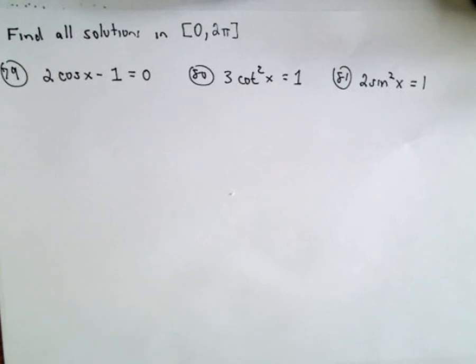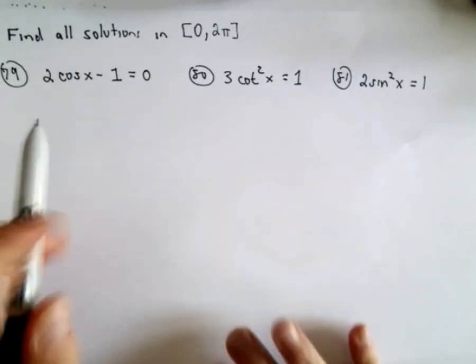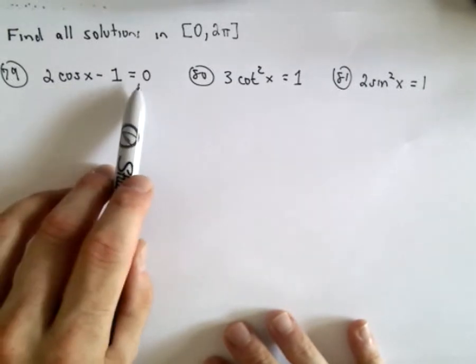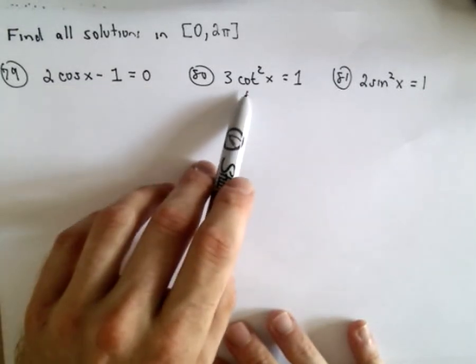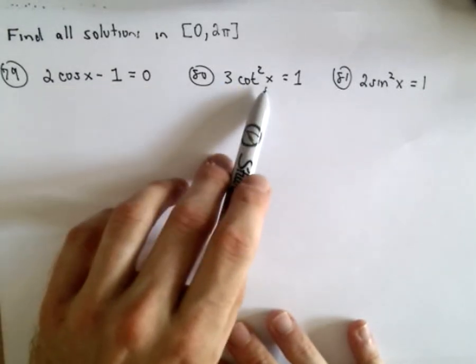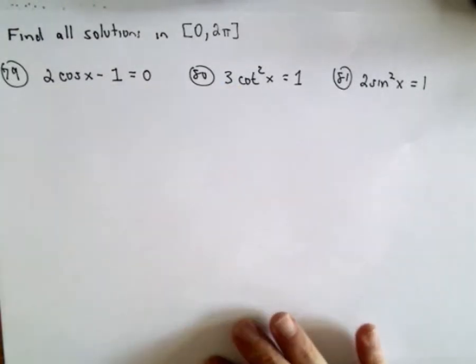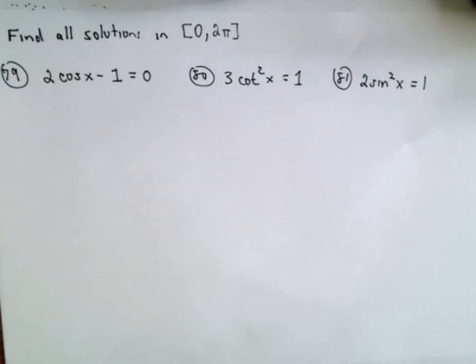Here we're going to solve three trig equations: 2 cosine x minus 1 equals 0, 3 times cotangent squared x equals 1, and 2 times sine squared x equals 1.